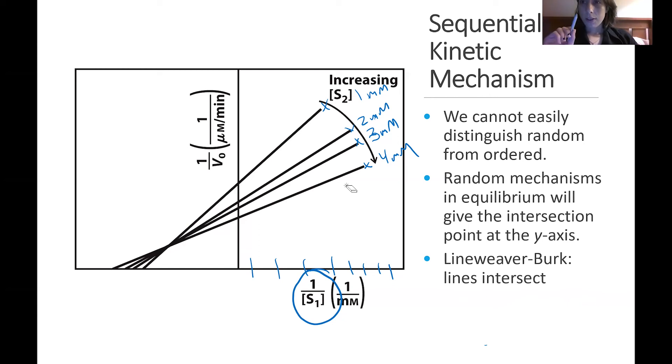Now another thing to note is where all of the lines intersect, this point right here. For a sequential mechanism, these will all intersect on this side of a plot, on this side of the x-axis, so in the negative x-axis region instead of the positive x-axis region. So again, this is where our y-axis is, this is where our x-axis is. If it's shifted to that negative region, this intersection, that also tells you that is a sequential mechanism.